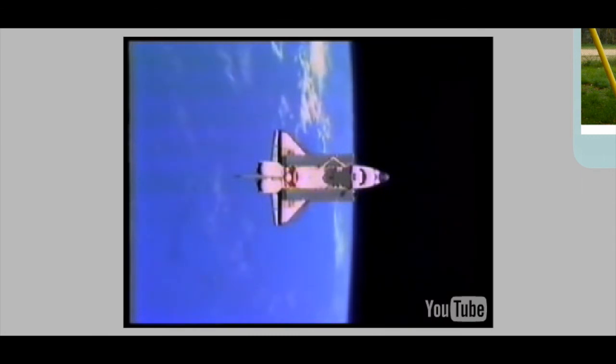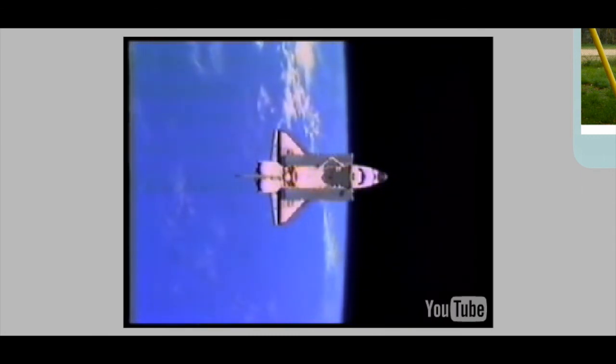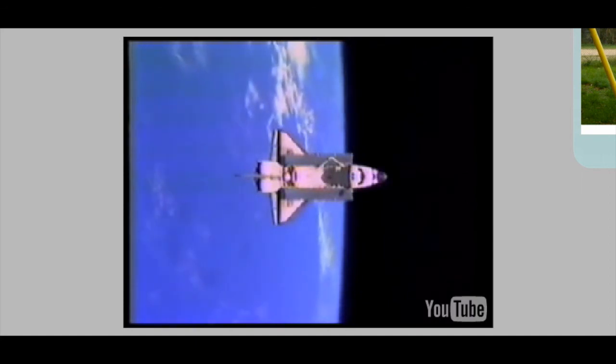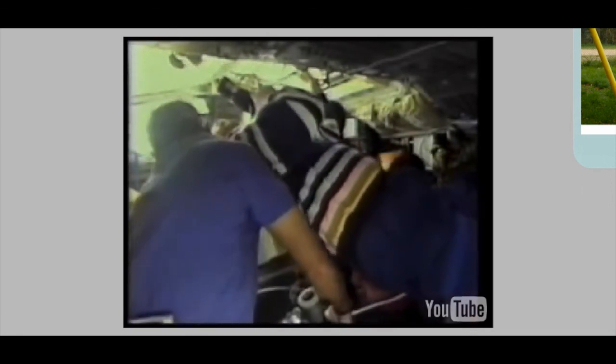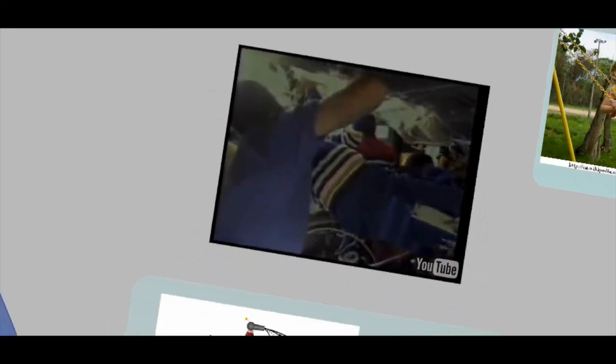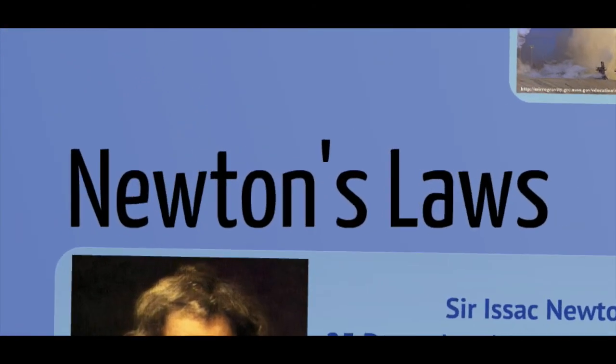Sealed against the vacuum of space, the crew are inside a huge bullet, the orbiter, traveling at ten times rifle speed. They and Discovery are falling around the Earth at exactly the same rate. So the astronauts float around inside the cabin apparently weightless, even though they haven't escaped from the Earth's gravity.